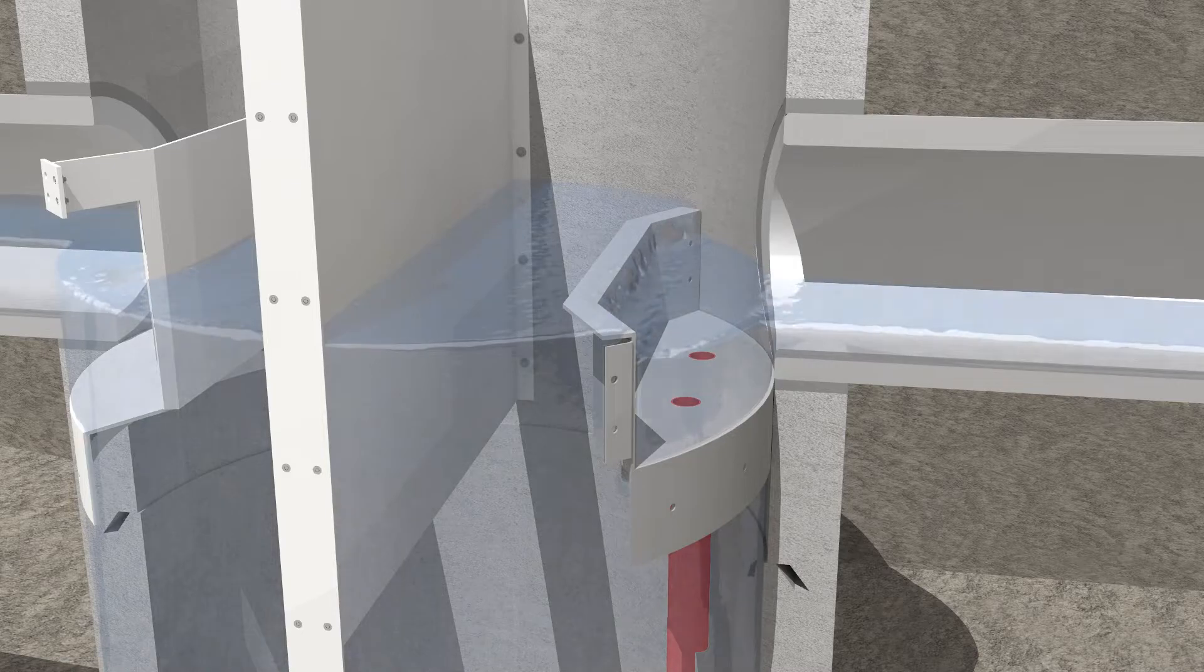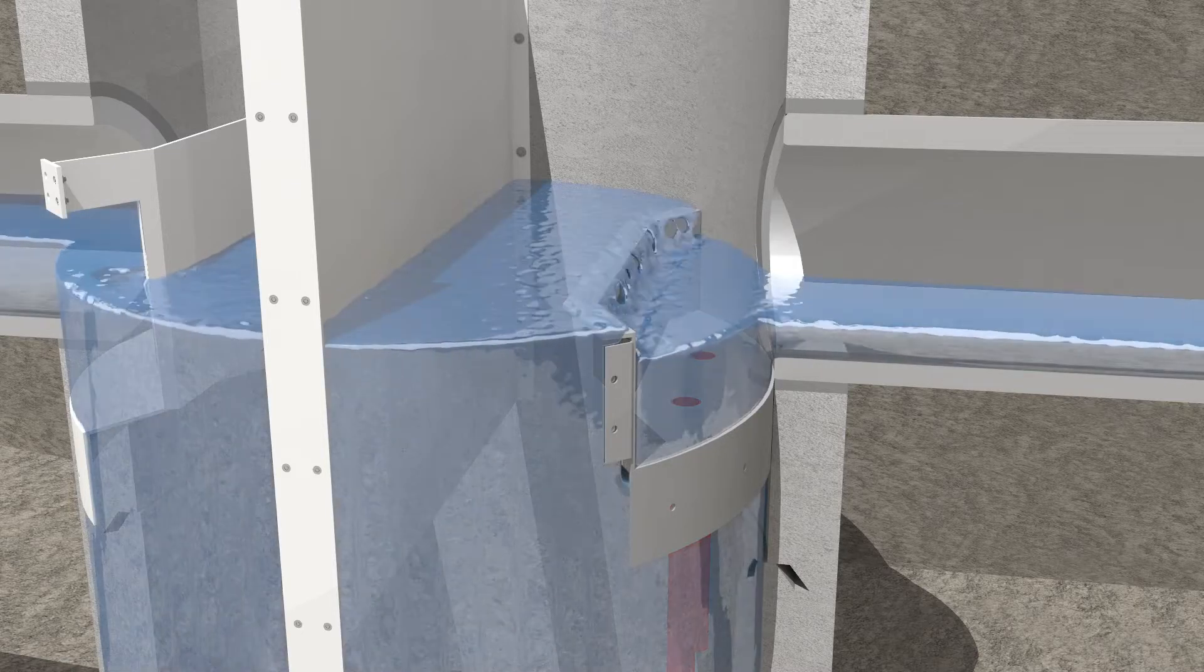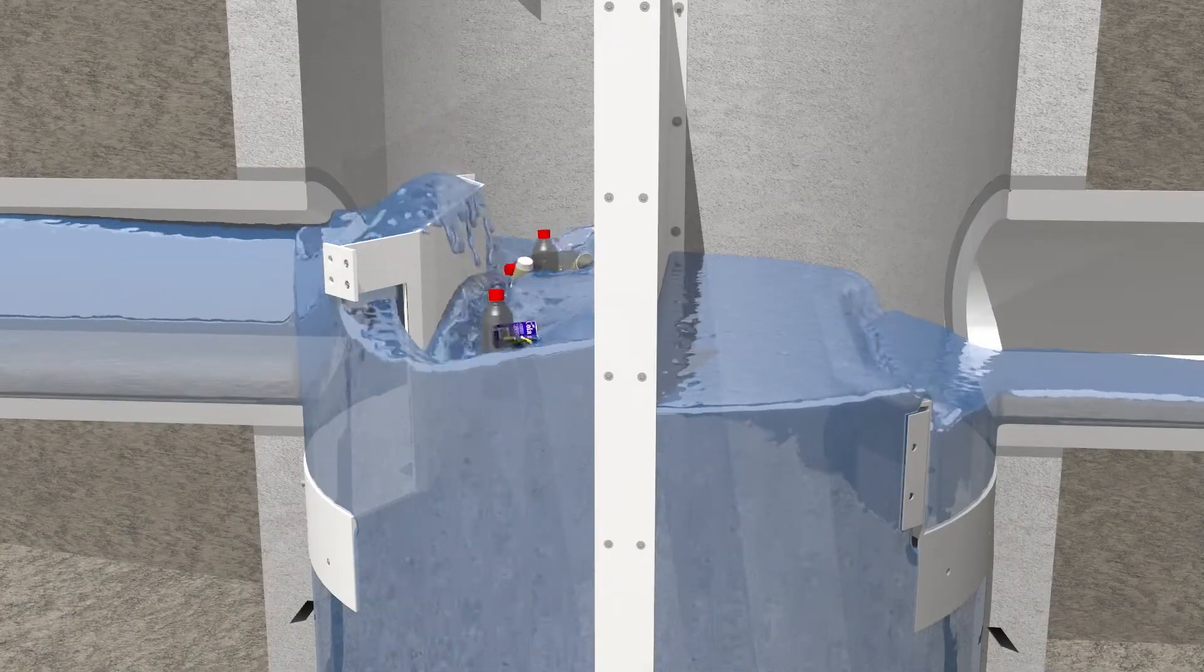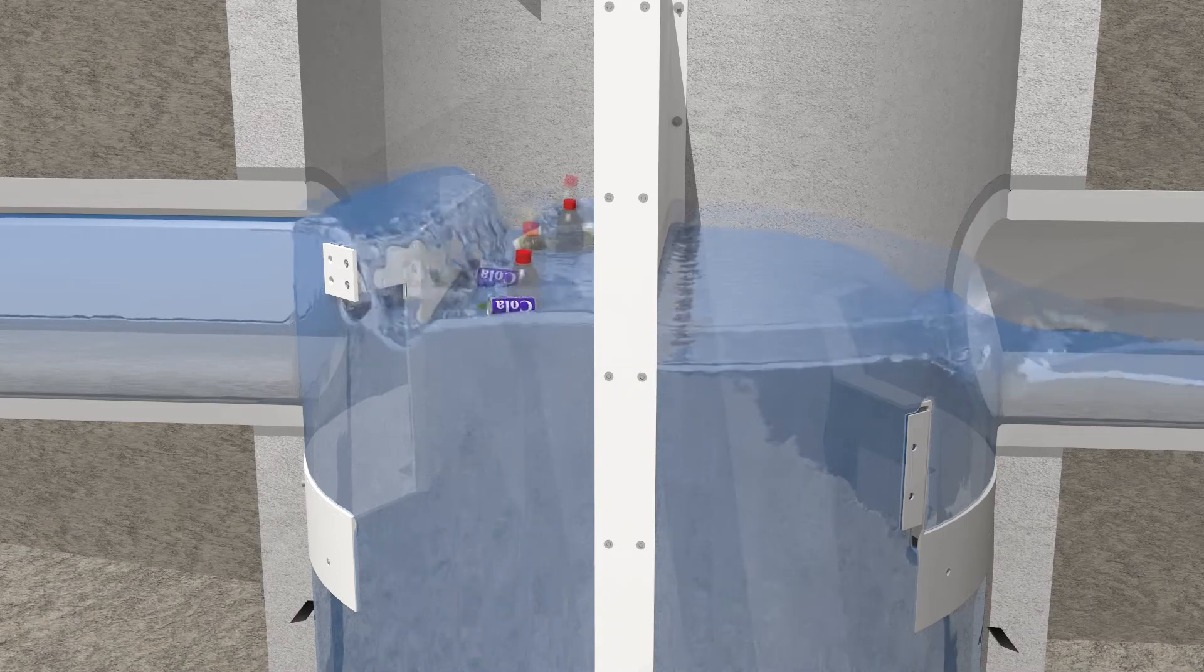But what happens when the heaviest storms cause stronger runoff? Cyclone X is prepared with its internal high-flow bypass.